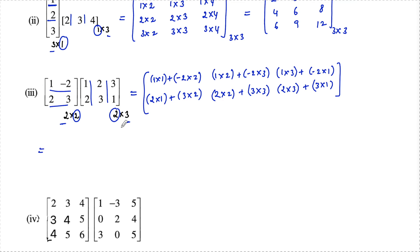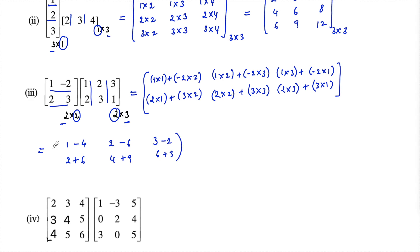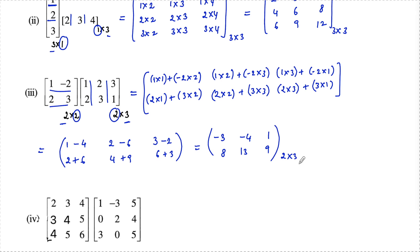Simplifying: 1 minus 4 is negative 3; 2 minus 6 is negative 4; 3 minus 2 is 1; 2 plus 6 is 8; 4 plus 9 is 13; and 6 plus 3 is 9. So the resulting matrix is [−3, −4, 1; 8, 13, 9], which is of order 2 rows and 3 columns.